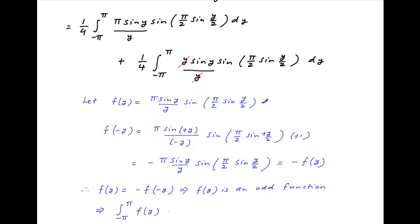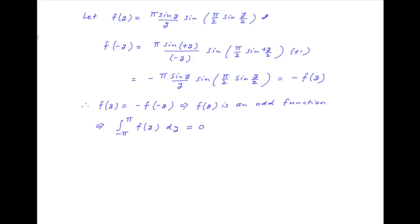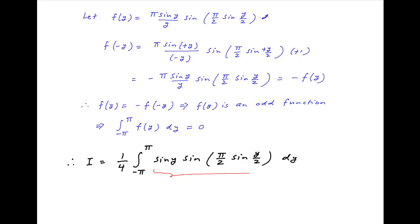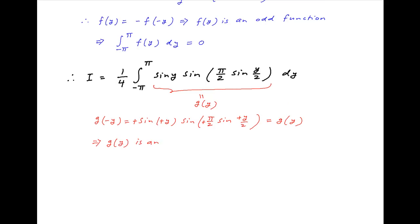Therefore, using properties of definite integrals, the integral from minus π to π of f(y) dy equals 0. We are left with only the second term: I equals (1/4) times the integral from minus π to π of sin(y)·sin(y/2) dy. Referring to this integrand as g(y), we find g(minus y) equals sin(minus y)·sin(minus y/2). Since sine of a negative angle is minus sine of that angle, all negative signs cancel and g(minus y) equals g(y).